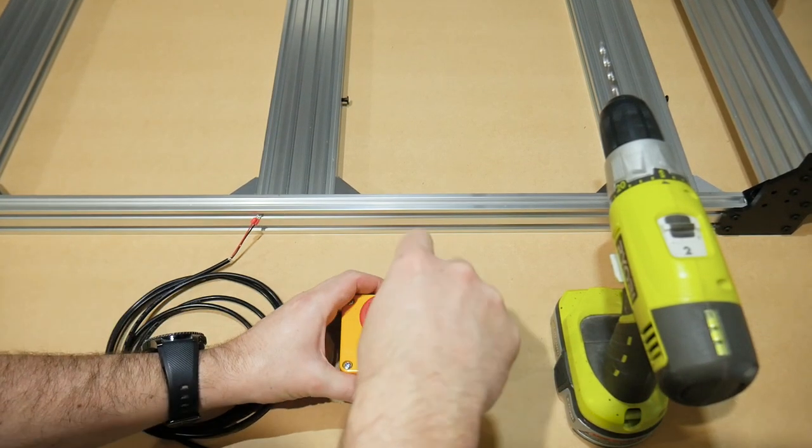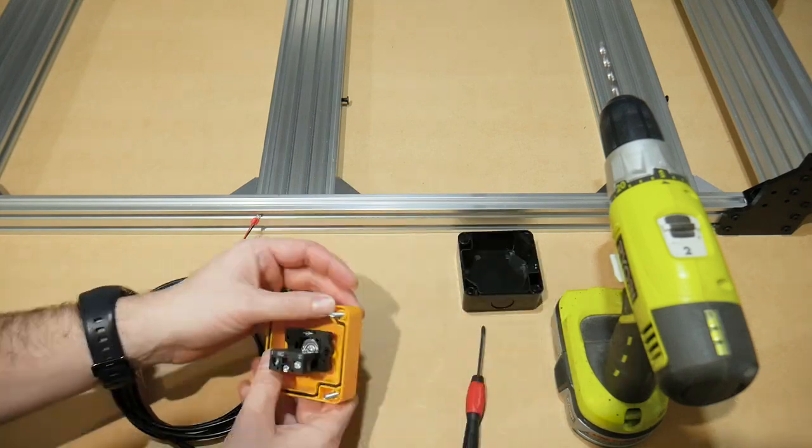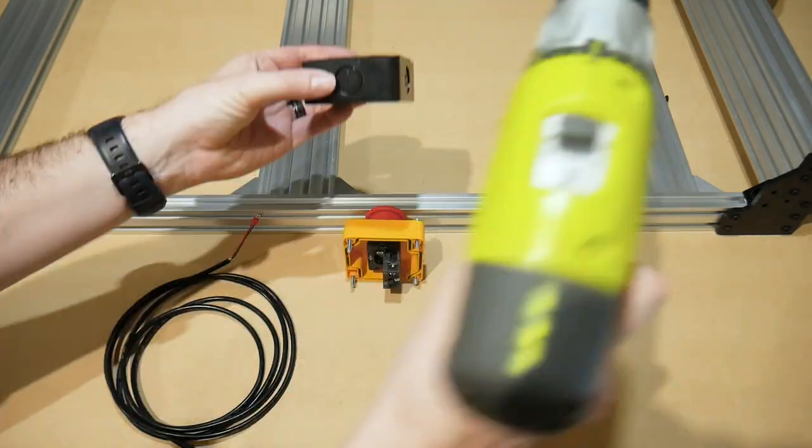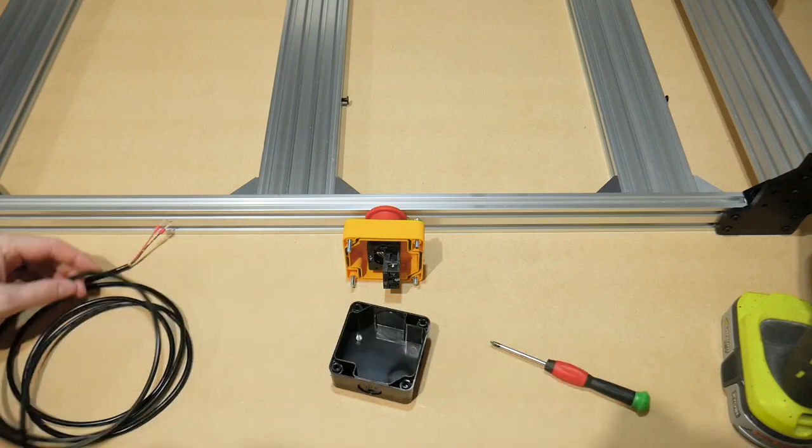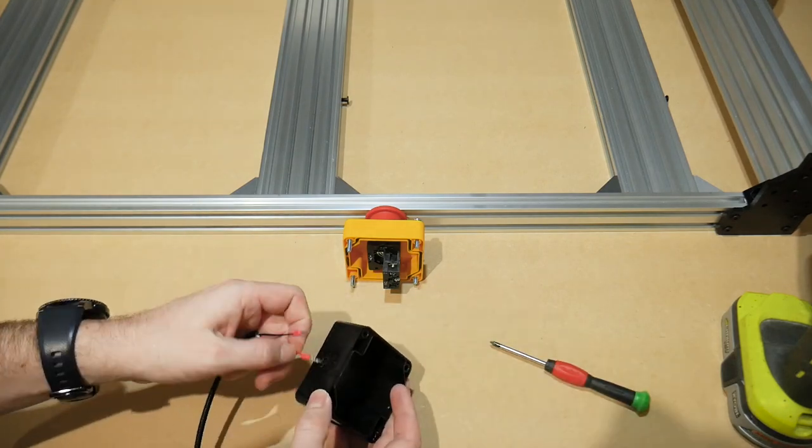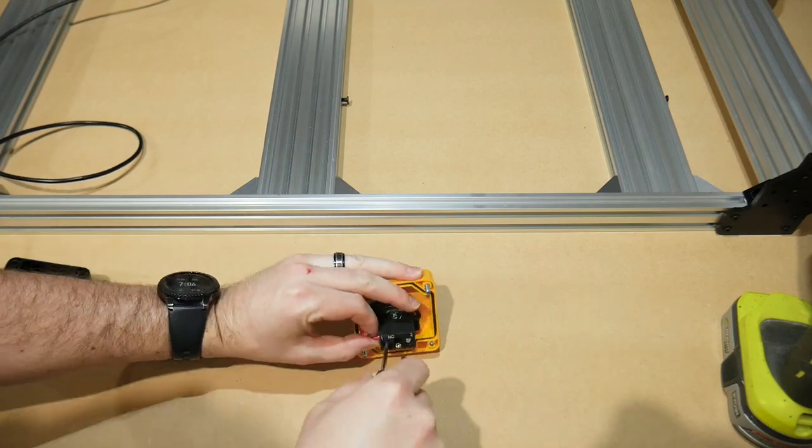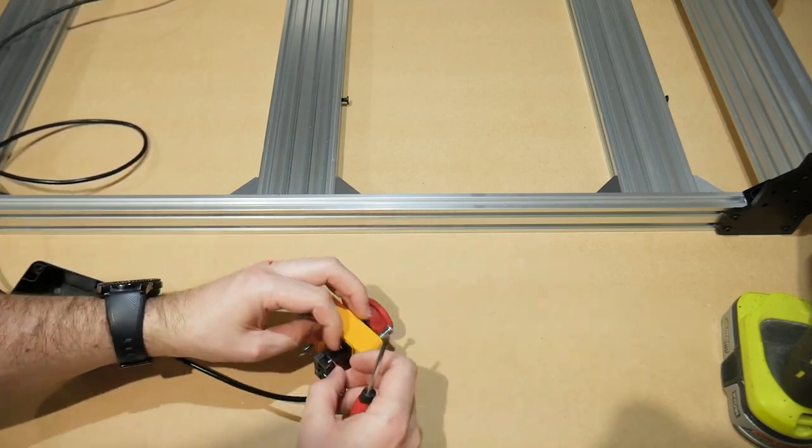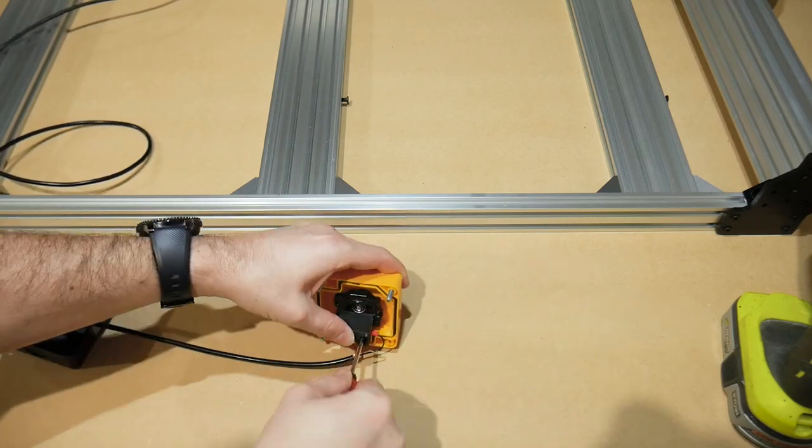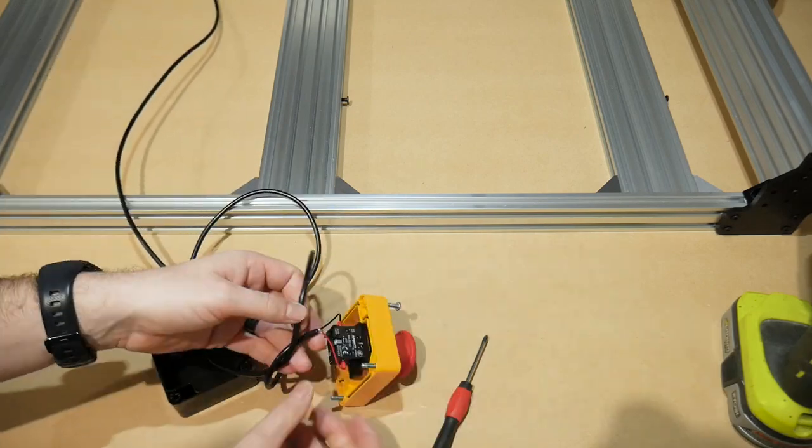Hey guys, welcome back. Let's get the emergency stop switch wired to the controller. This is a simple two-wire connection, one going to the 12-volt, the other going to the pin labeled e-stop. I'm tying a knot in mine for a little bit of strain relief.